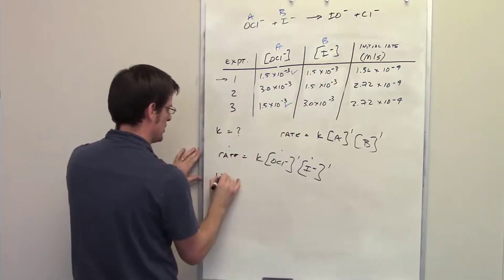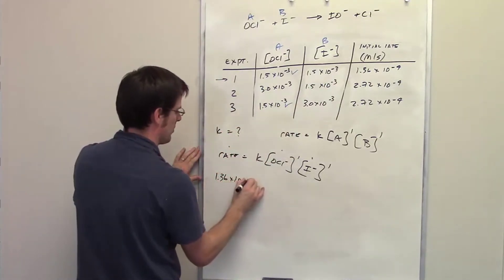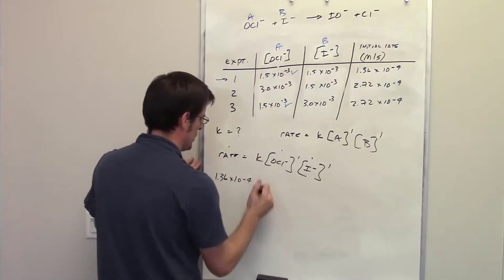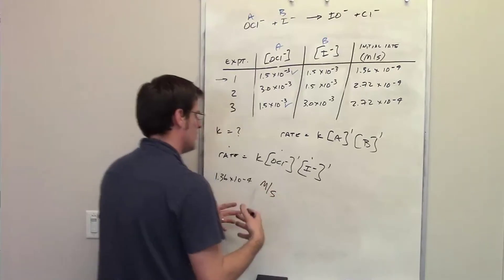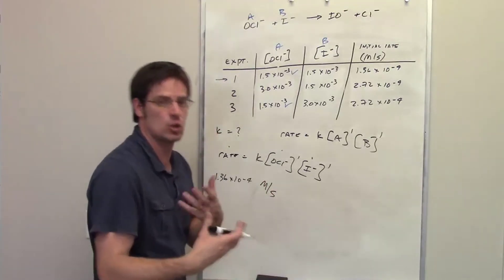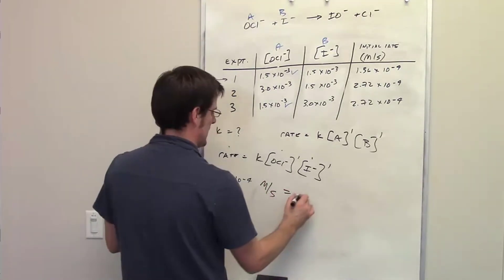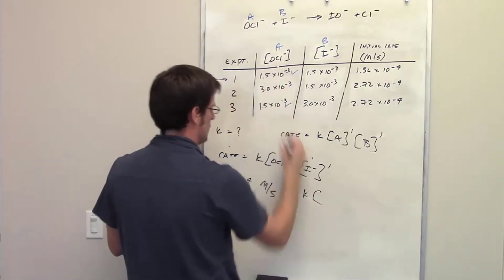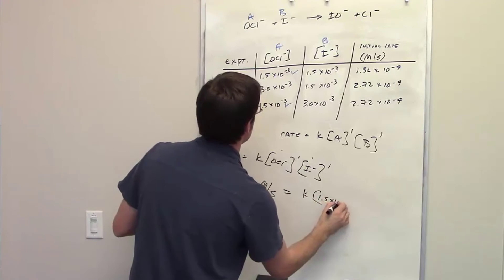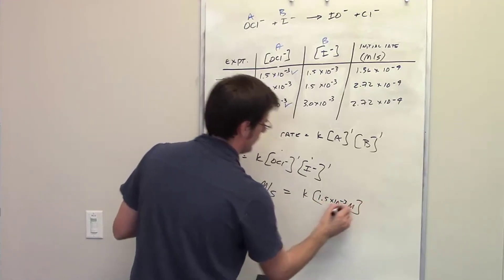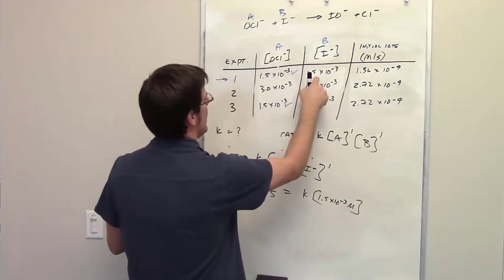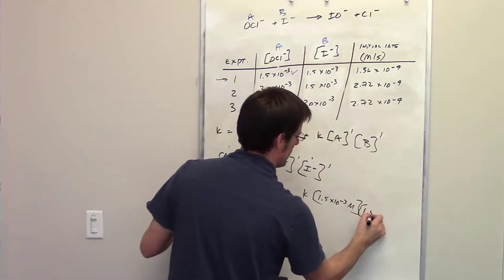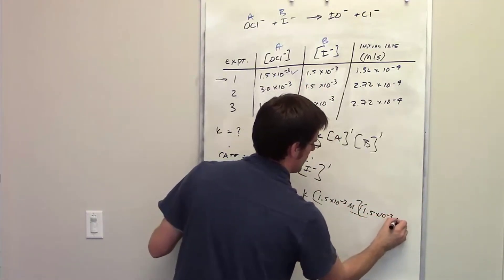I take my rate, which is 1.36 times 10 to the negative 4th molars per second. I set it equal to K. And I probably should show units so that when we're finally done, we end up getting the correct units for K. I set that equal to K multiplied by the concentration of hypochlorite in experiment 1, which is 1.5 times 10 to the negative 3rd molars, multiplied by the concentration of iodide component B, which is also 1.5 times 10 to the negative 3rd molars.